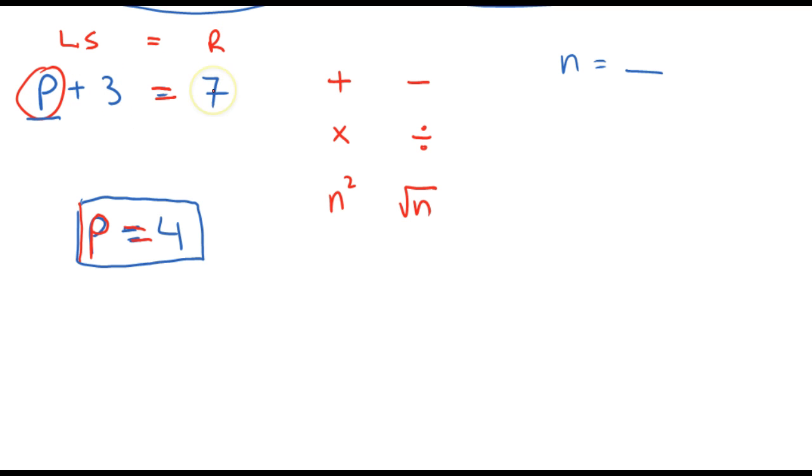Once I'm able to get it on its own, then whatever is on the right side, whatever number is on the right side, has to equal that P. So right now, I see that, if I look at my equal sign, there's the left side of the equal sign, and there's the right side of the equal sign there.